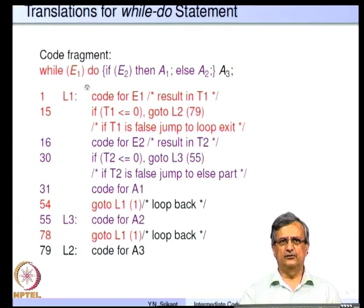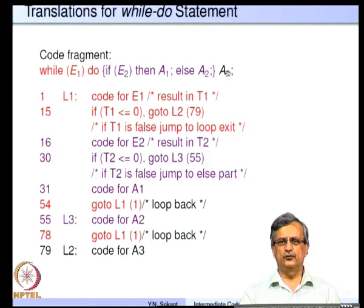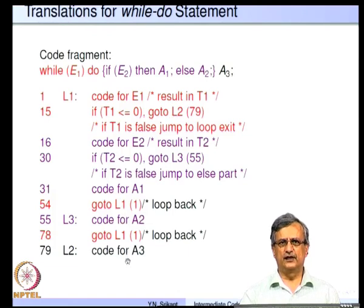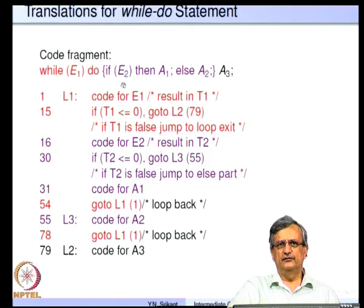A while loop example with an inner if-then-else: while e1 do (if e2 then a1 else a2), then a3. Code: label L1: code-for-e1, if t1<=0 goto L2; code-for-e2, if t2<=0 goto L3; code-for-a1, goto L1; label L3: code-for-a2, goto L1; label L2: code-for-a3. After a1 or a2 we jump back to L1 (the beginning of the while), showing how jumps from within while loops also arise.